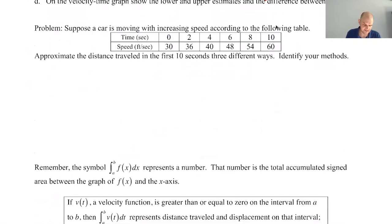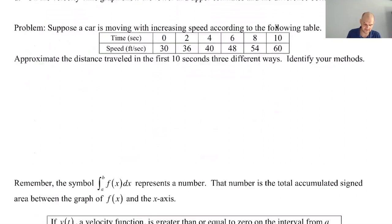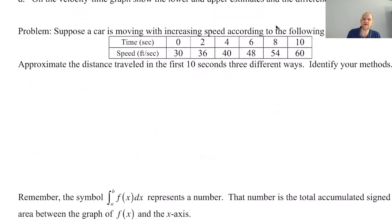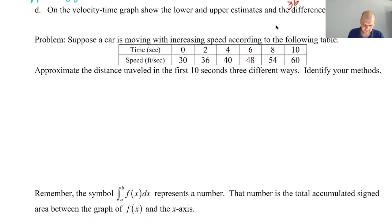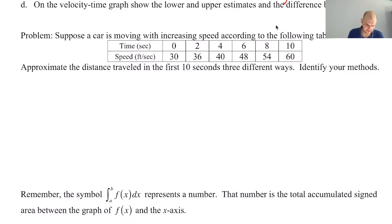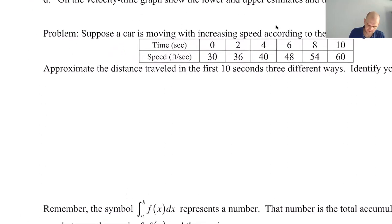All right, times in seconds, speed is in feet per second, whatever that means. Approximate the distance traveled in the first 10 seconds three different ways, and identify your methods. Okay, so I'm going to not draw it this time. We're going to try this and see how it works. Hopefully you kind of understand what's happening as we go. Actually, I should probably draw it. All right, but it doesn't need to be great, right? So let's focus in on not being great.